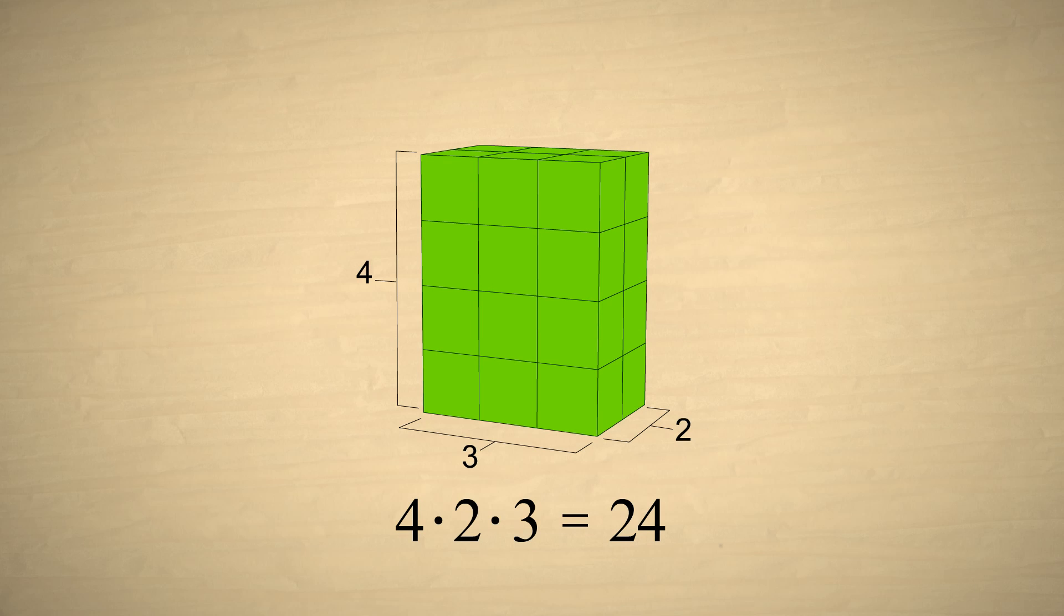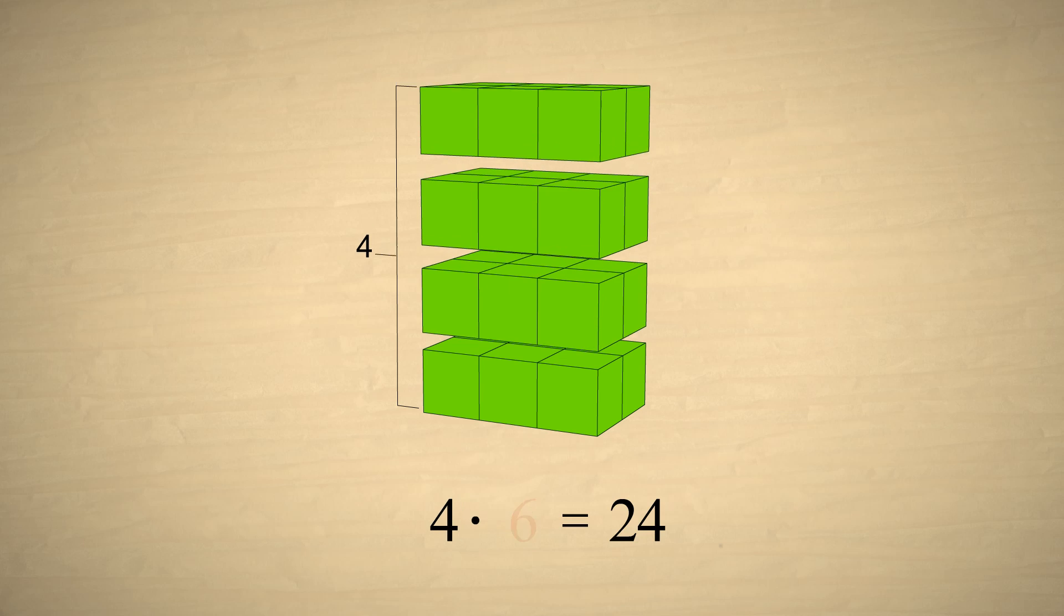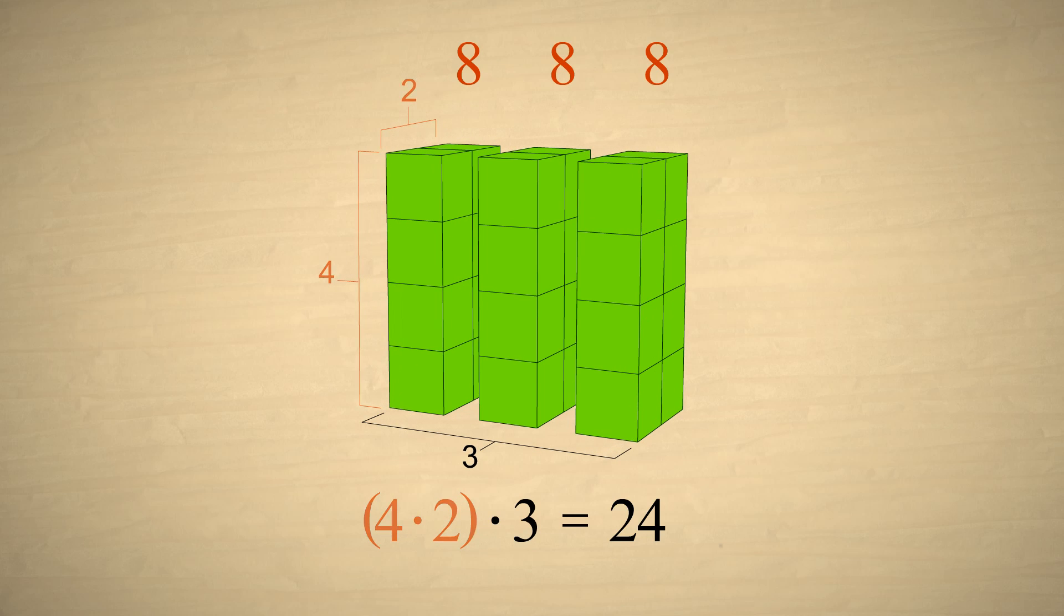Let's start with our stack of 24 boxes and group them in different ways before multiplying. For instance, if we group the 2 and the 3, we get four groups of 6, which is still equal to 24. Or we can group the 4 and the 2 to get three groups of 8, which is still 24.